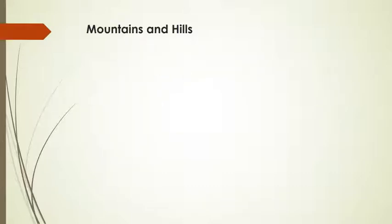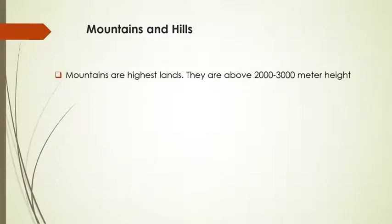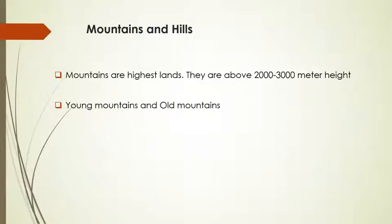Here we have the first two geographical terms: mountains and hills. Mountains are the highest lands — they are above 2000 to 3000 meters high. There are two types of mountains: young mountains and old mountains.